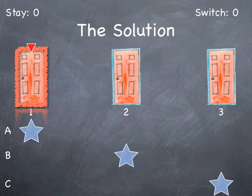So, suppose you choose door number one, and it happens to be situation A, where the prize is behind door number one. In this case, you should stay with your original door.